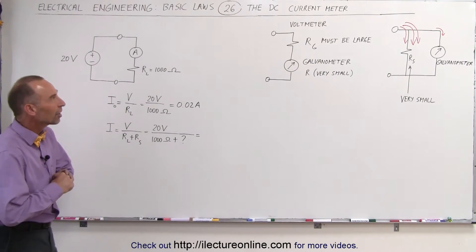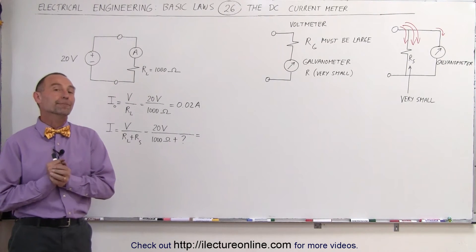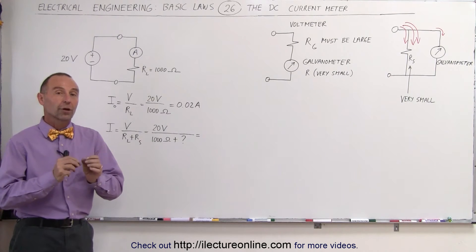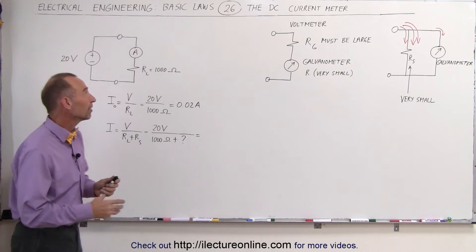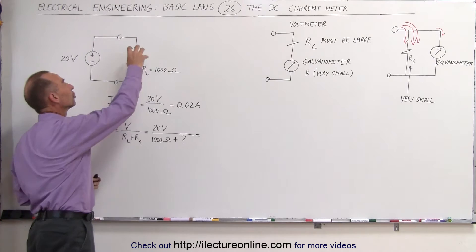Welcome to Electron Line. Now let's talk about the DC current meter. When you want to measure the current of a branch or the current of a circuit, you must insert the current meter right into the circuit.